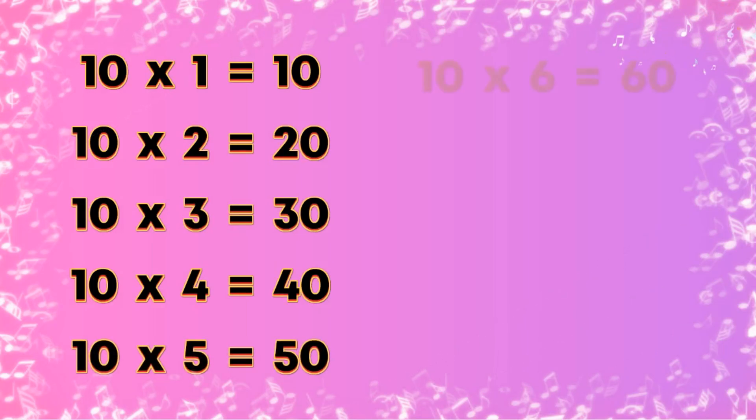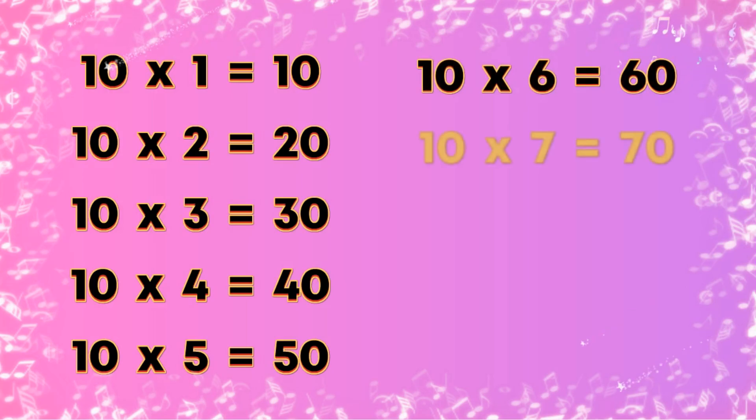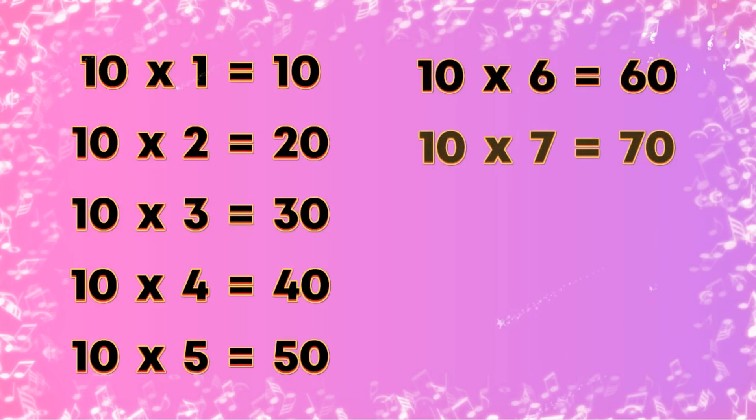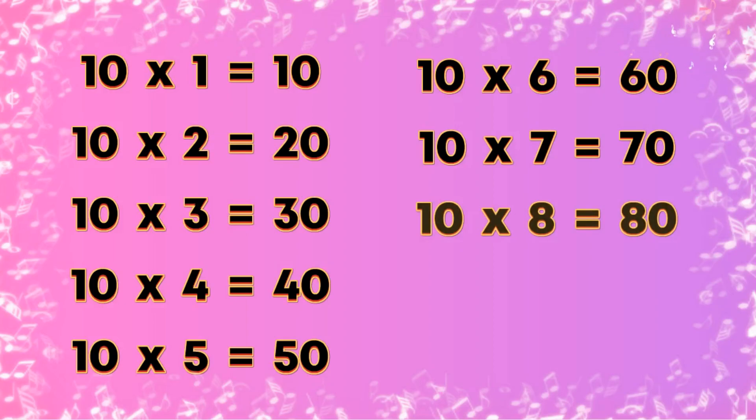Table of 10: 10×1=10, 10×2=20, 10×3=30, 10×4=40, 10×5=50, 10×6=60, 10×7=70, 10×8=80, 10×9=90, 10×10=100.